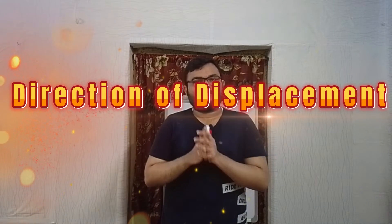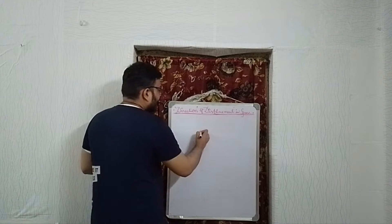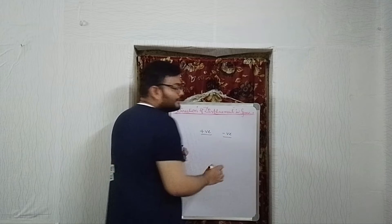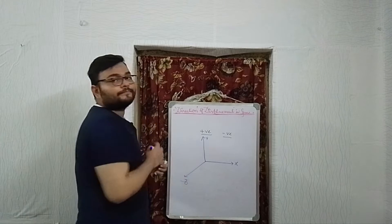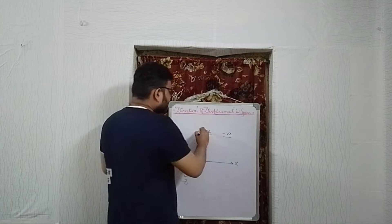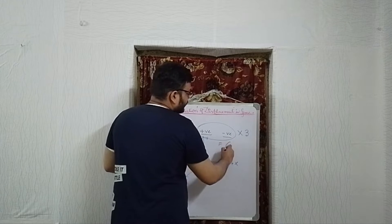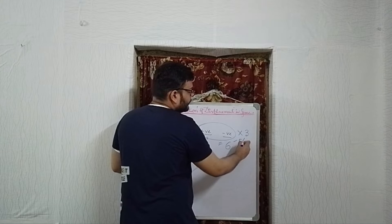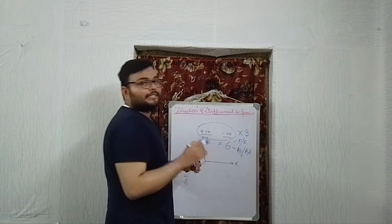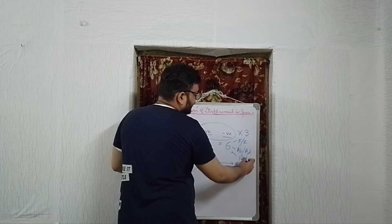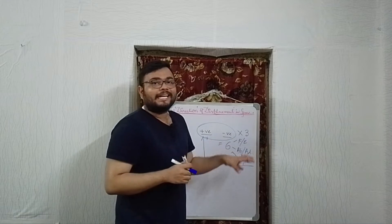Welcome to the biomechanics series. In this video I am going to discuss the third kinematic variable: the direction of displacement. In the previous video on degrees of freedom, I mentioned there could be two directions — positive and negative — in three axes: X, Y, and Z. So movement can occur in three pairs, two directions times three axes equals six total. The first pair is flexion and extension, the second is abduction and adduction, and the third is internal rotation and external rotation.